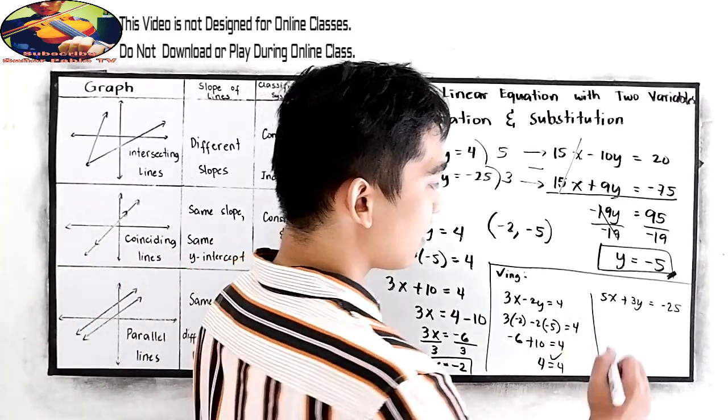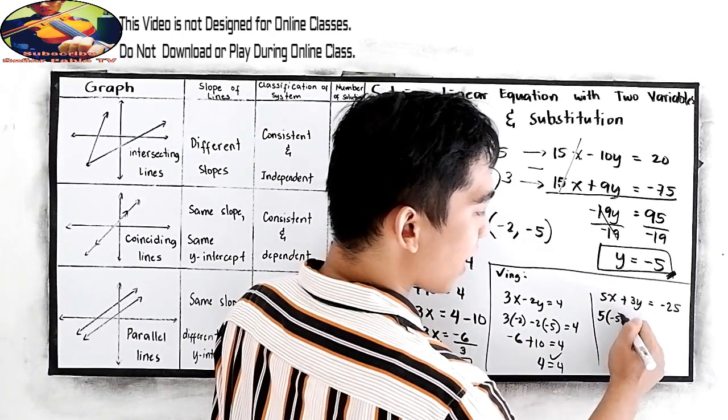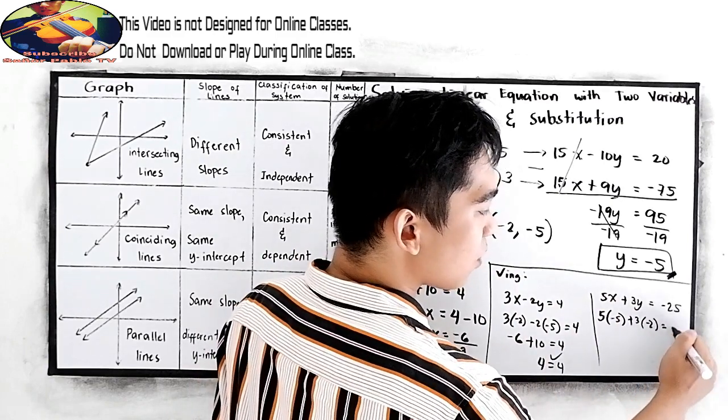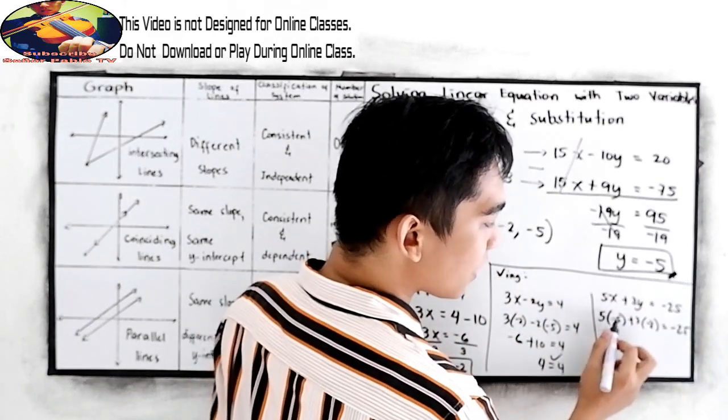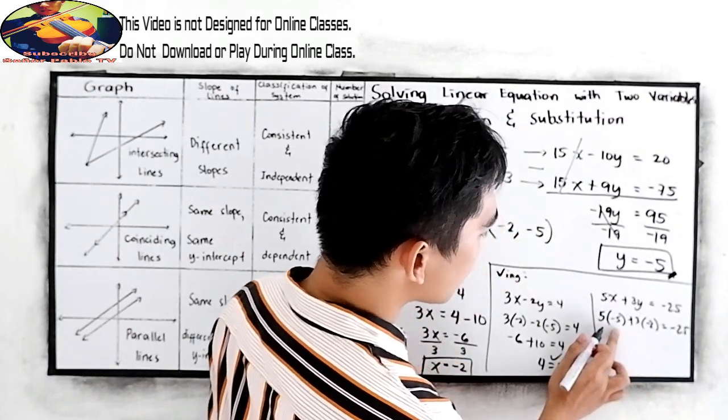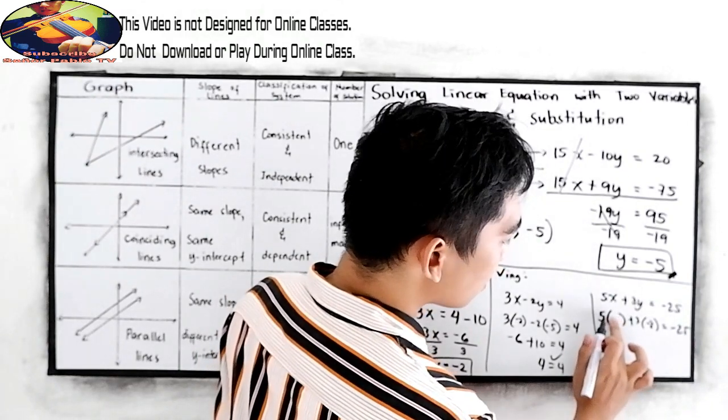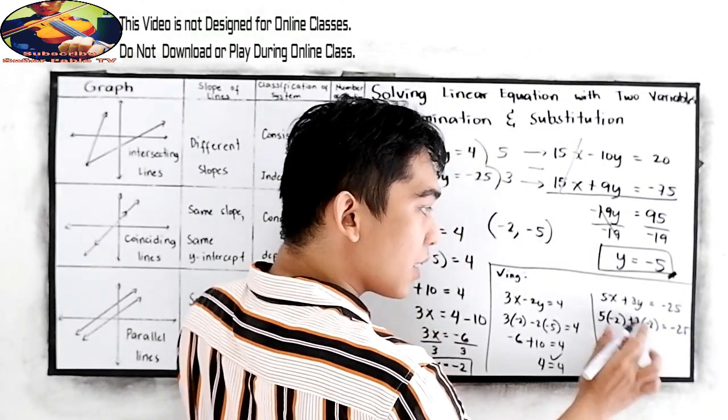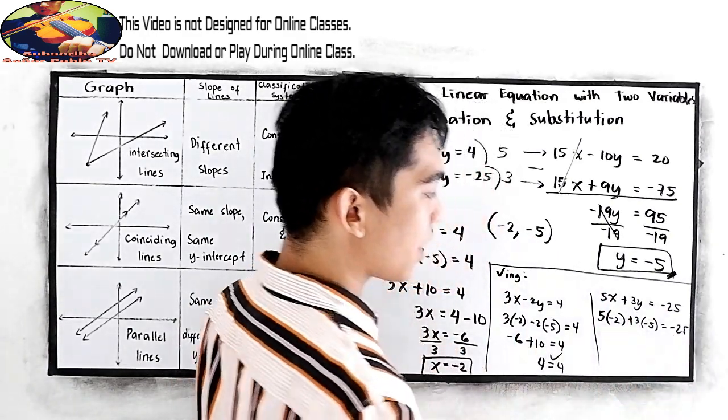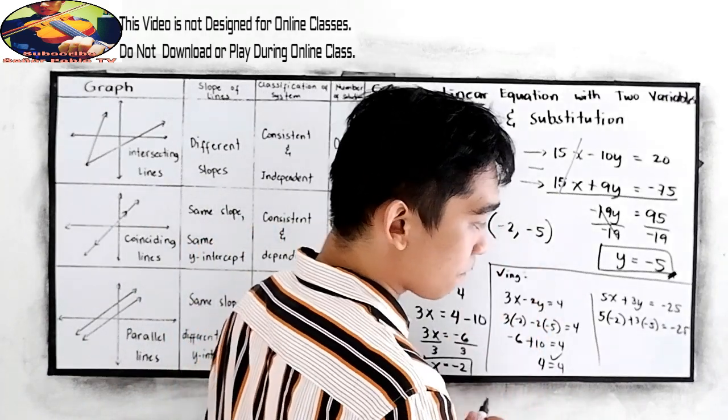And the other one, 5 times negative 2 plus 3 times negative 5 is equal to negative 25. Our x is negative 2. And our y is negative 5. Be careful in substituting the value for the x and y.